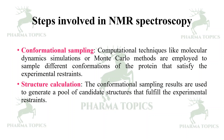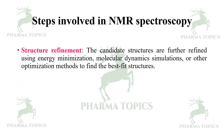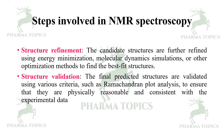In structure calculation, the conformational sampling results are used to generate a pool of candidate structures that fulfill the experimental restraints. In structure refinement, the candidate structures are further refined using energy minimization, molecular dynamic simulations, or other optimization methods to find the best-fit structures. Finally, in structure validation, the predicted structures are validated using various criteria such as Ramachandran plot analysis to ensure they are physically reasonable and consistent with the experimental data.